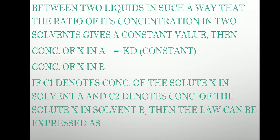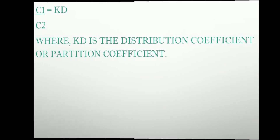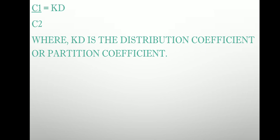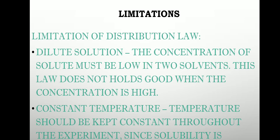If C1 denotes the concentration of solute X in solvent A, and C2 denotes the concentration of solute X in solvent B, then the equation is written as C1 divided by C2 equals Kd, which is the distribution constant or coefficient. This is also called the partition coefficient, because partitioning occurs between the two layers. So it is known by both names: partition coefficient and distribution coefficient.